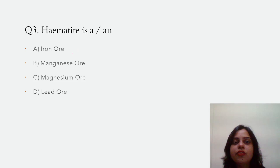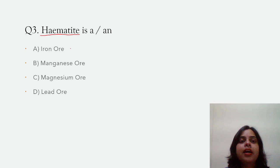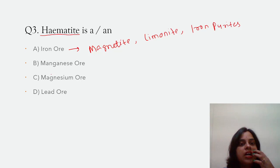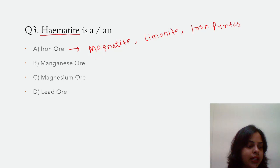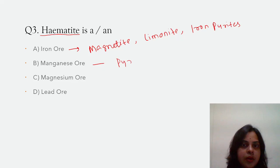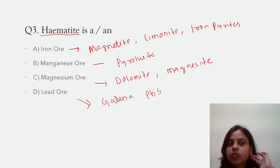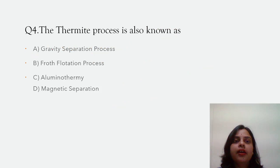Hematite is: an iron ore, a manganese ore, a magnesium ore, or a lead ore. Hematite is an important iron ore. Other important iron ores are hematite, magnetite, limonite, and iron pyrite. For manganese ore we have pyrolusite. In magnesium ore we have brucite and magnesite. In lead ore we have galena. So the correct answer is: hematite is an iron ore.